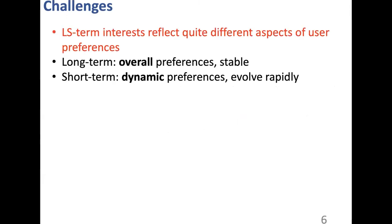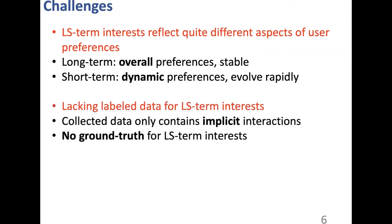To disentangle the two aspects, there are three main challenges. The first is that long- and short-term interests reflect quite different aspects of user preference. Long-term interests are users' overall preference, which is stable over a long time, while short-term interests are dynamic preference that can evolve rapidly according to users' recent interactions. The second challenge is lacking labeled data, since collected data only contains implicit interactions and there is no ground truth for long- and short-term interests.